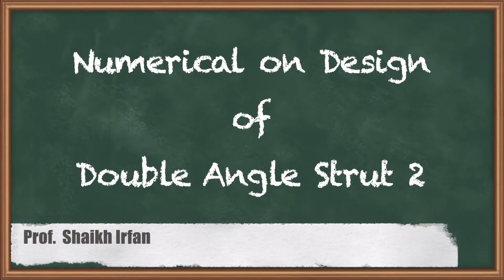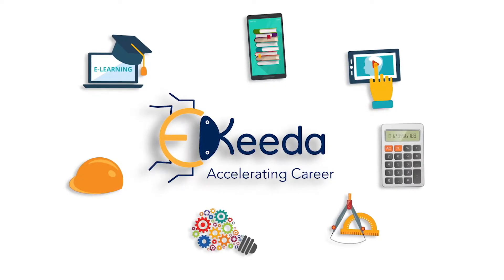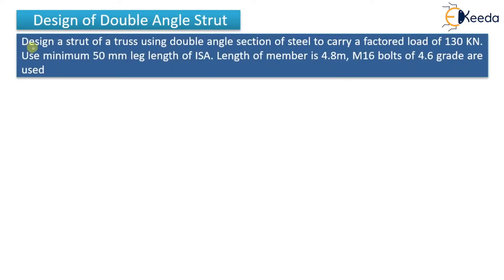Hello everyone. In this video we are going to see another numerical on design of double angle strut. The problem statement is: design a strut of a truss using double angle section of steel to carry a factored load of 130 kilonewton. Use minimum 50 mm leg length of ISA. Length of member is 4.8 m. M16 bolts of 4.6 grade are used.